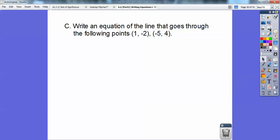Last part: Write an equation of the line that goes through the following points. So what I'm going to do is first calculate the slope. Remember the slope formula? y sub 2 minus y sub 1 over x sub 2 minus x sub 1. This is y2, this is y1, this is x2, this is x1. So negative 4 minus a negative 2 becomes negative 4 plus 2 or negative 6. Negative 5 minus 1 is negative 6. So you get negative 1.